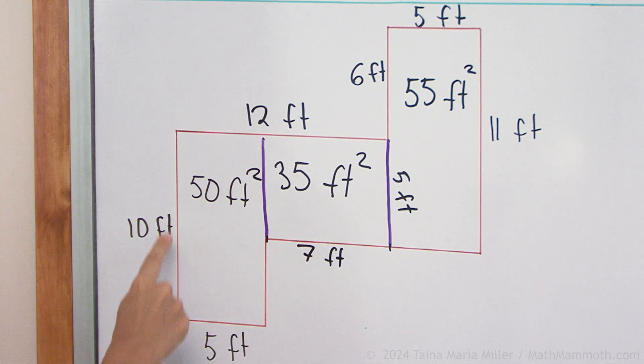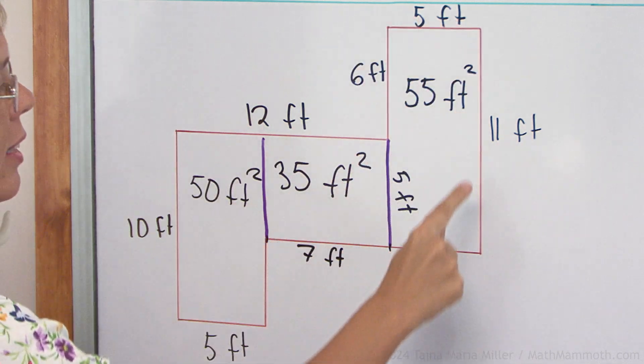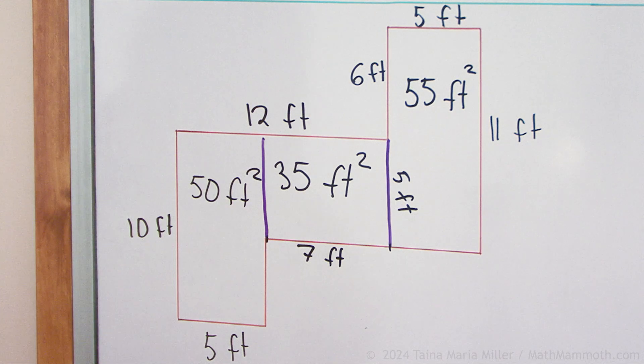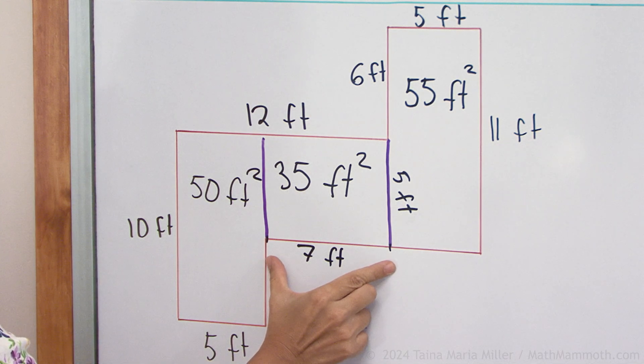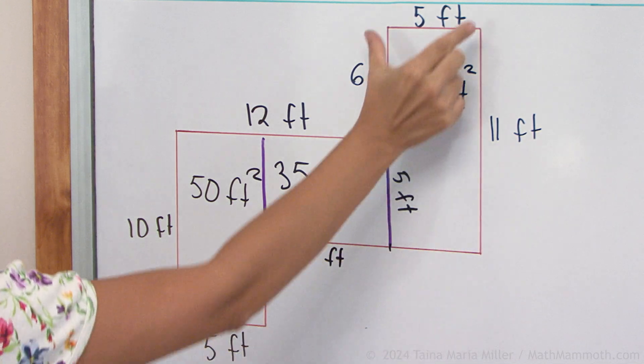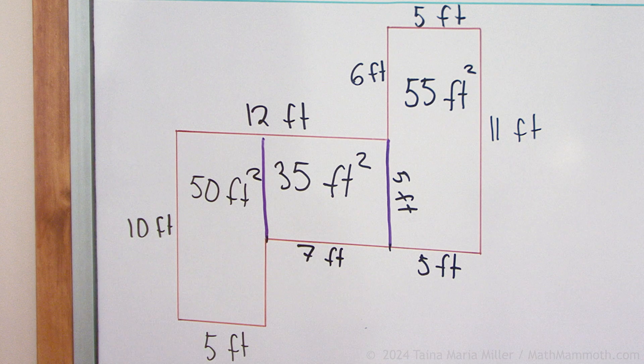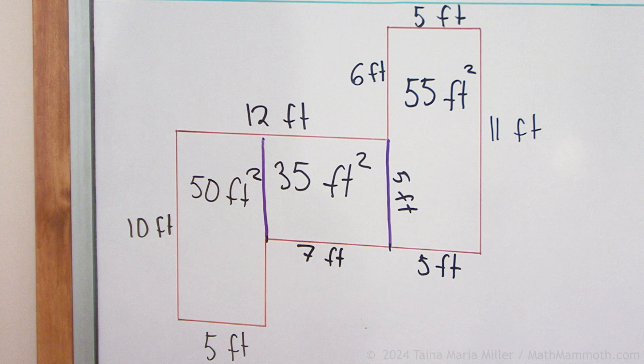And then the perimeter. For the perimeter we just add all these side lengths. Are there any missing ones? Here's the 7 feet. How about this one here? That would be 5 feet. Looks like we're good to go. Just go adding.